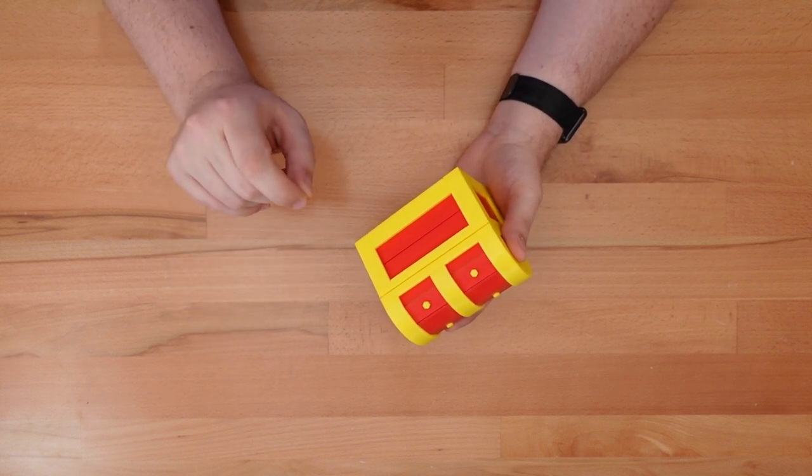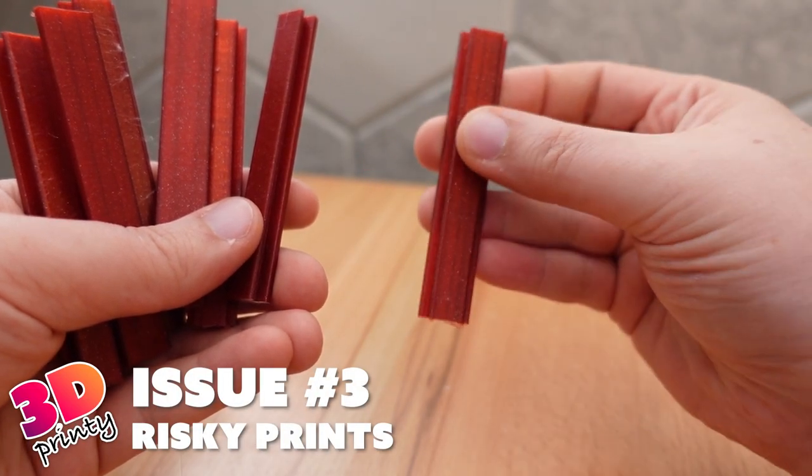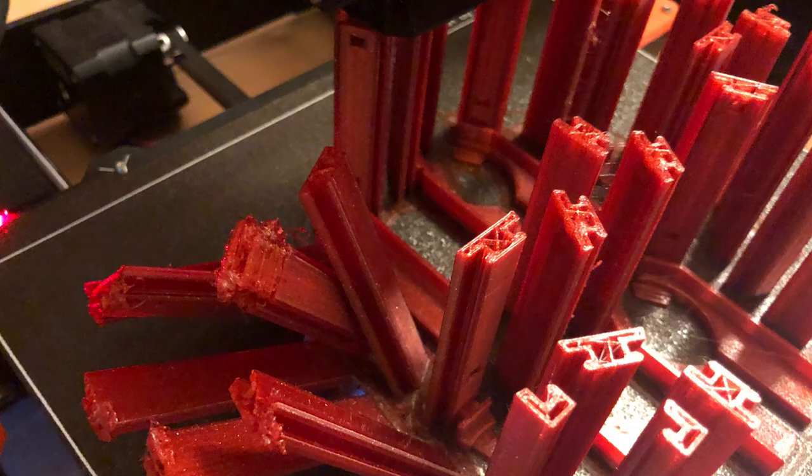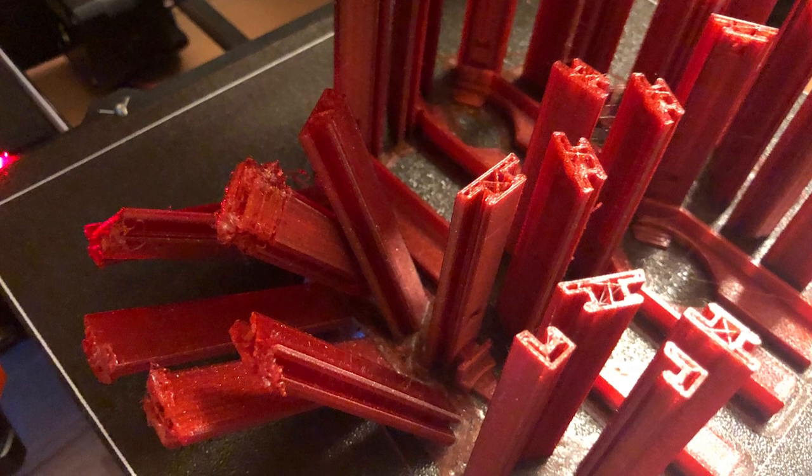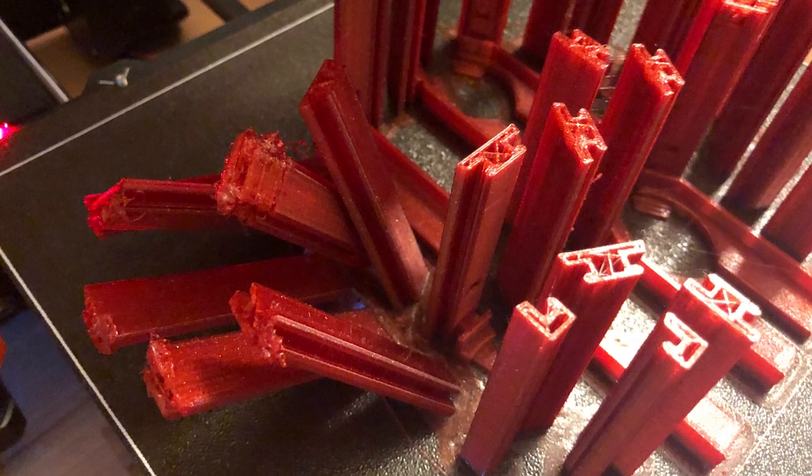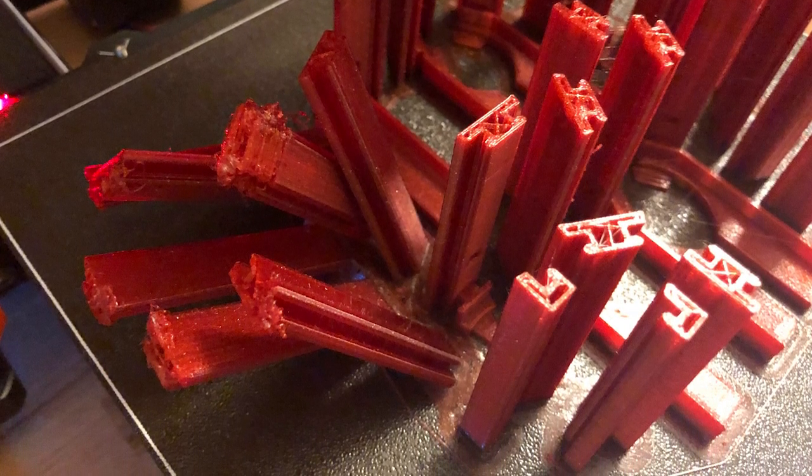Many of the parts are risky prints. These slats, for example, are printed vertically. Just a little wobble will cause the print to fail. And if you're printing multiple slats at the same time, one failed slat can easily take down the others.